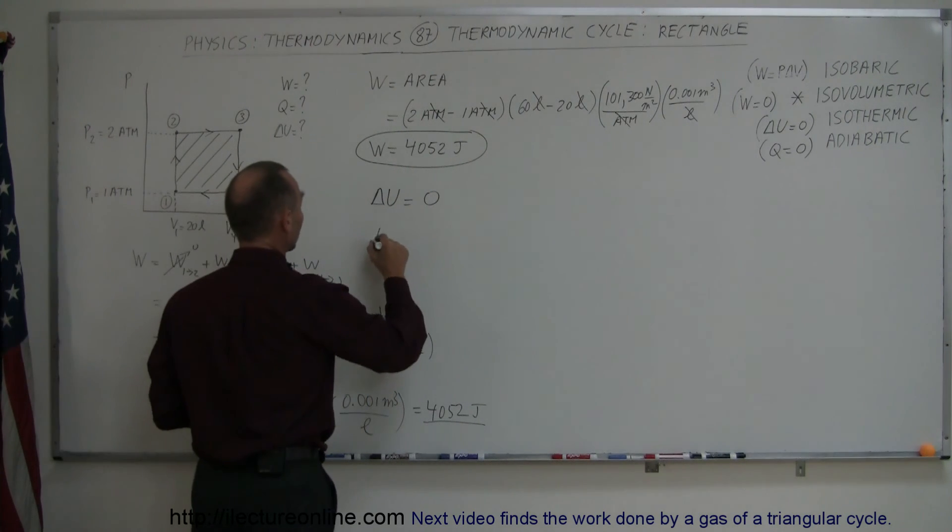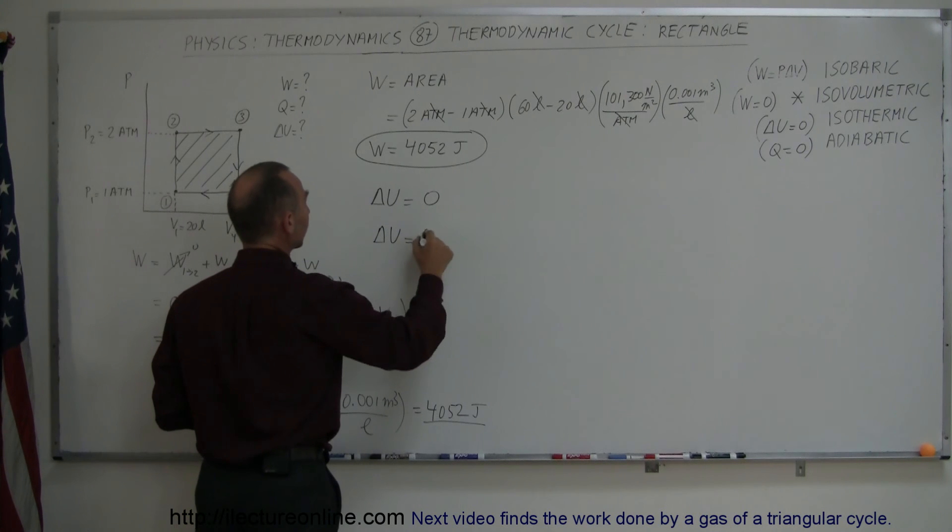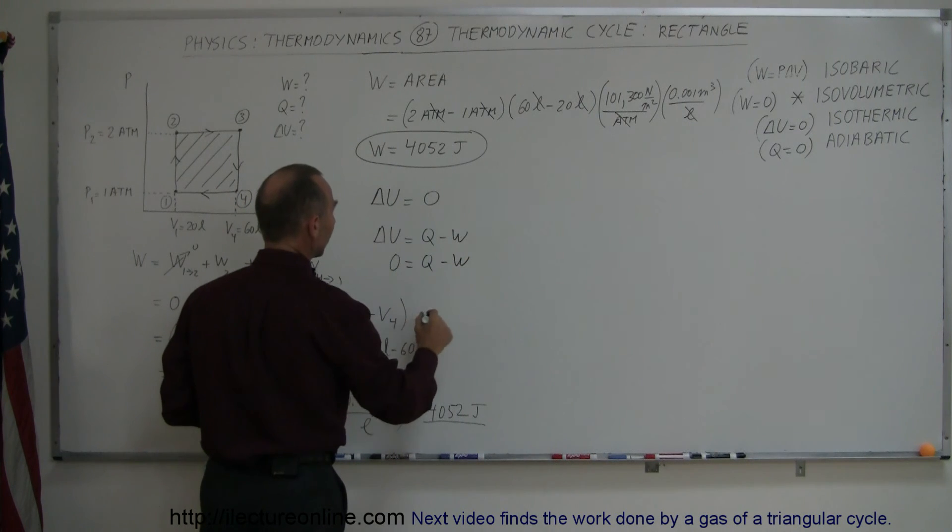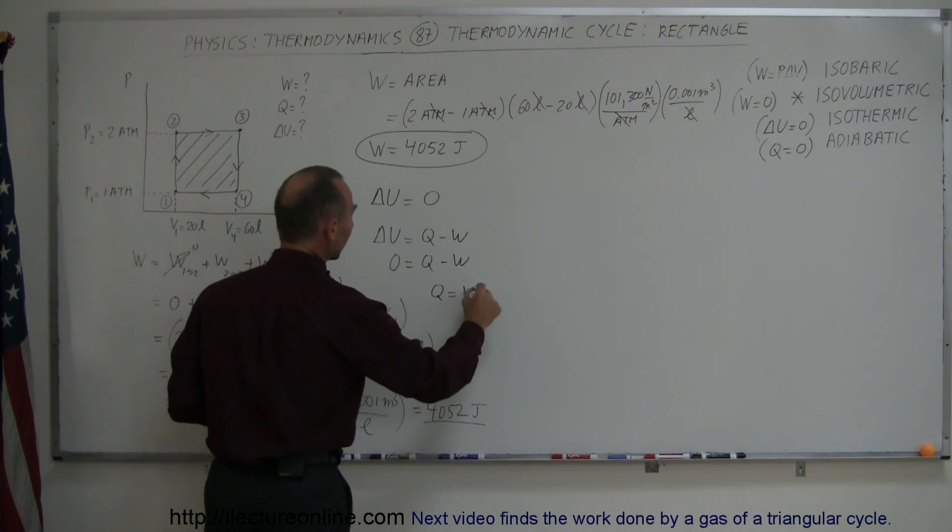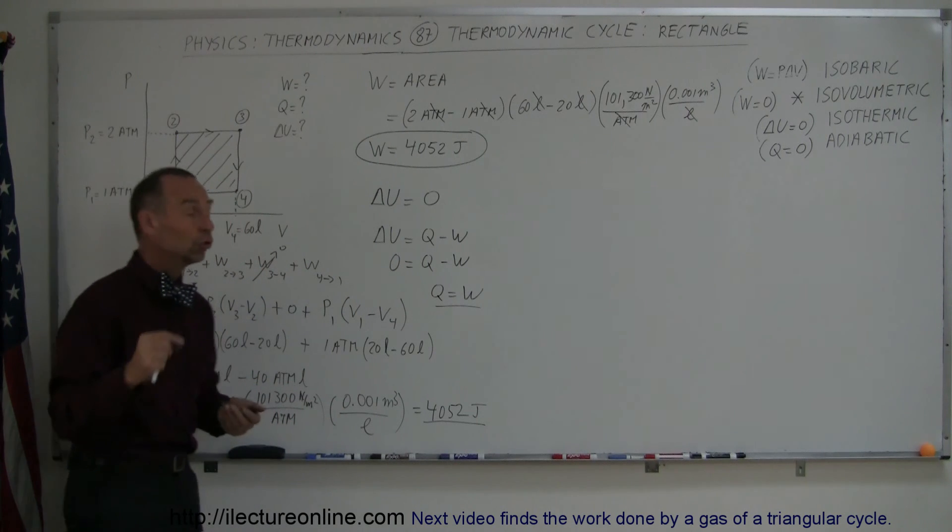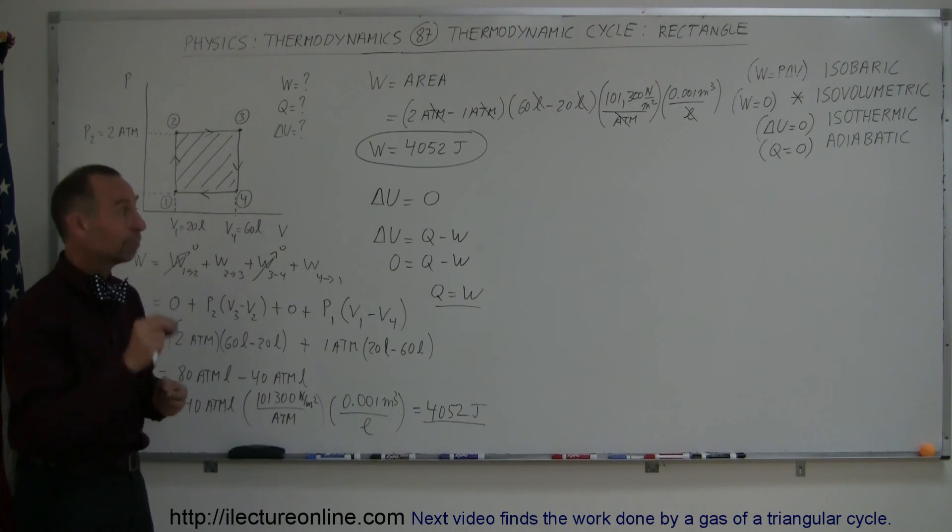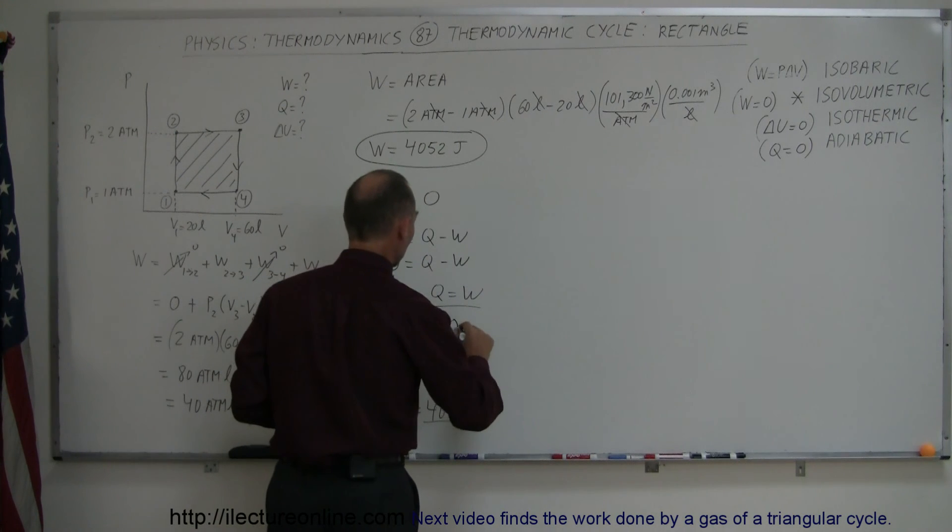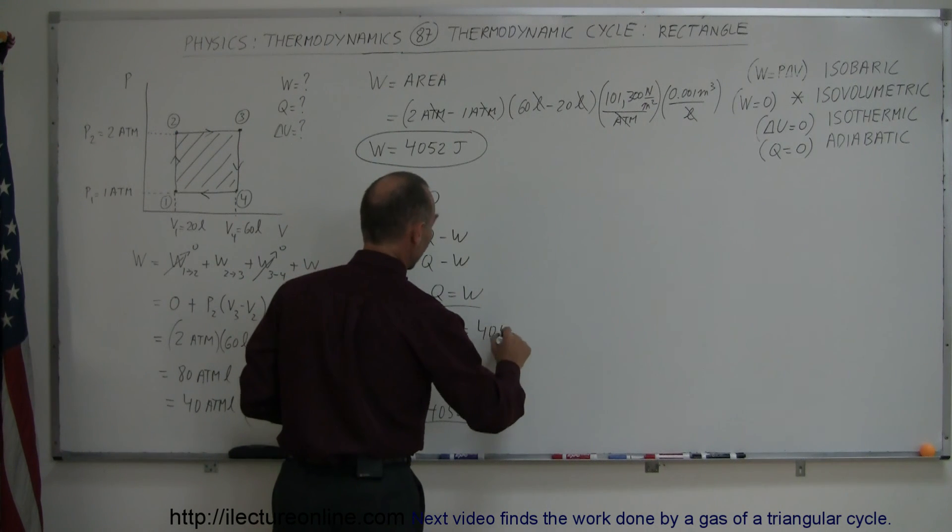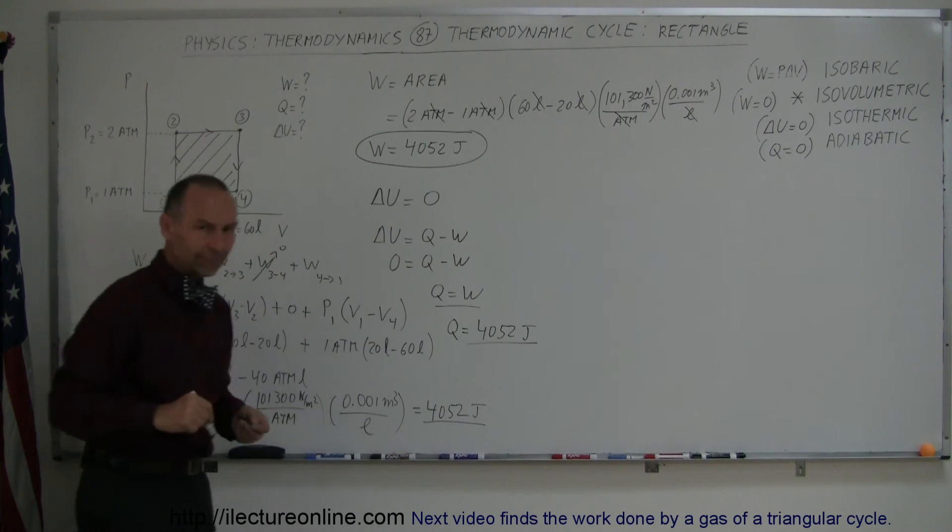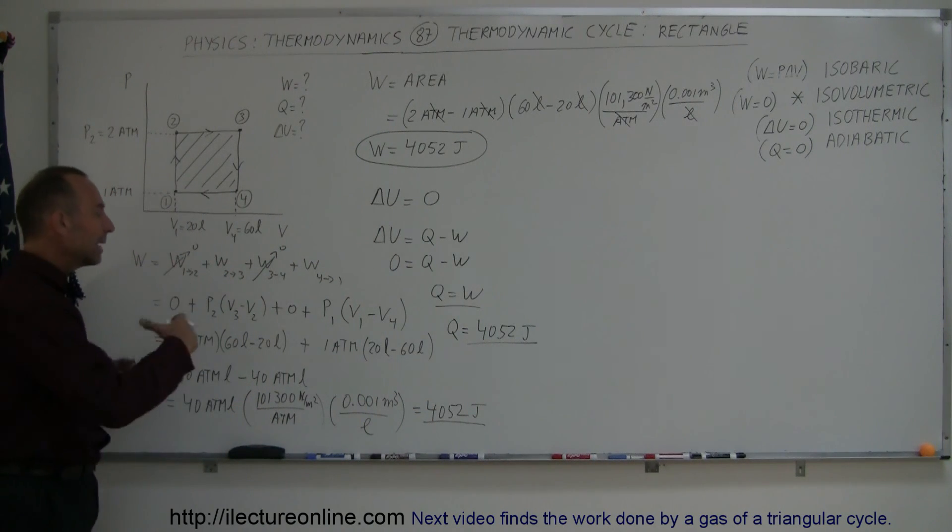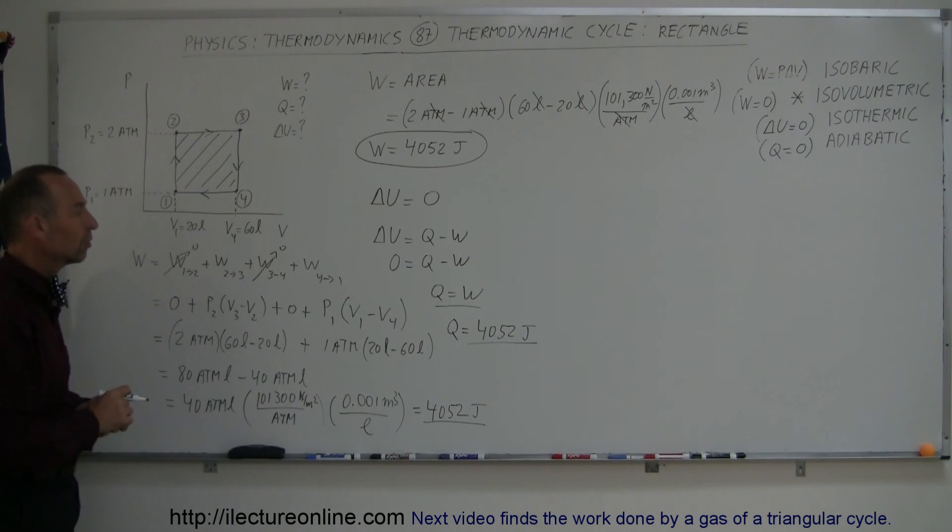Which means, if we use the first law of thermodynamics, delta U equals Q minus W. If delta U is equal to 0, we get Q minus W equals 0, or Q equals W. In other words, the heat added to the gas equals the work done by the gas in a complete circle. So therefore, in this case, Q is also equal to 4052 joules. And that way this cyclical process can continue. You keep adding heat, you keep doing work, and the process continues.